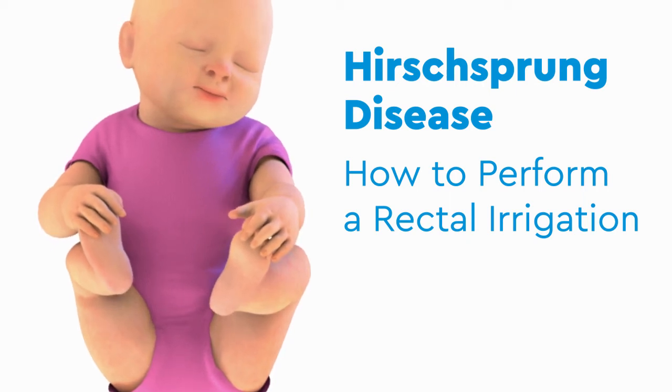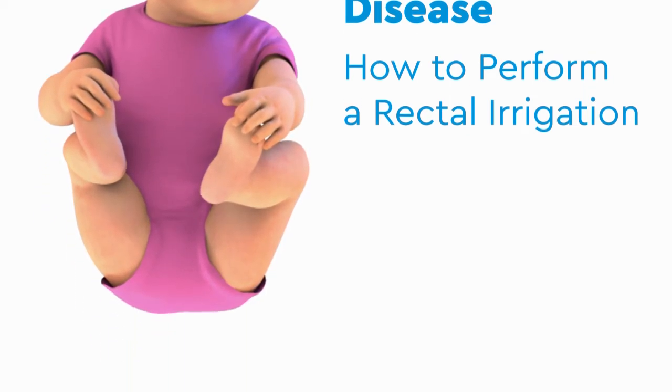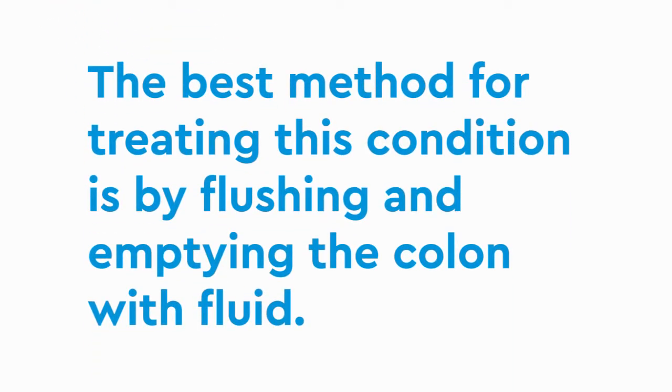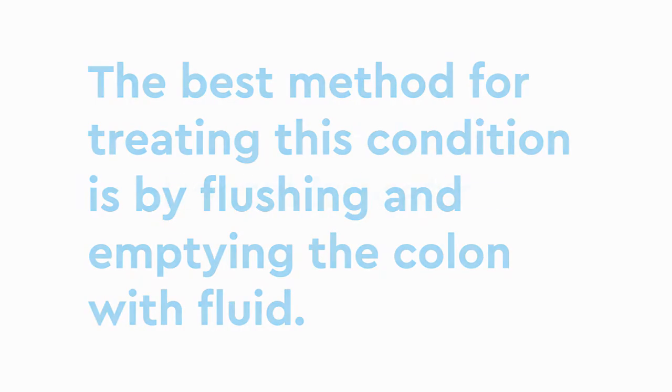Children born with Hirschsprung disease often suffer from enterocolitis. The best method for treating this condition is by flushing and emptying the colon with fluid, which is called rectal irrigation.